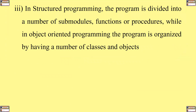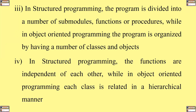Number three, in structured programming, the program is divided into a number of sub-modules, functions or procedures, while in object-oriented programming, the program is organized by having a number of classes and objects. Number four, in structured programming, the functions are independent of each other, while in object-oriented programming, each class is related in a hierarchical manner.